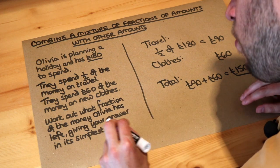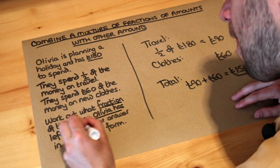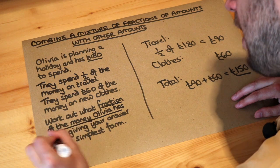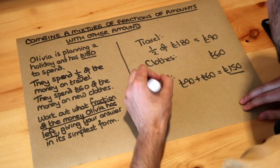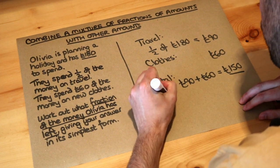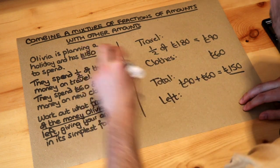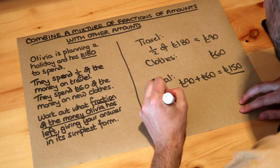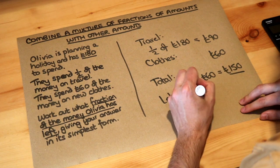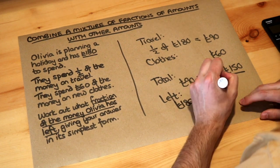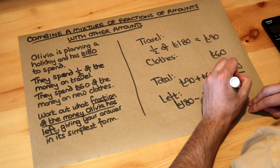Now it's asking you what fraction of the money do you have left? So what money do we have left? We just take the £180 total and subtract what we spent — £150 — and that leaves just £30 left.